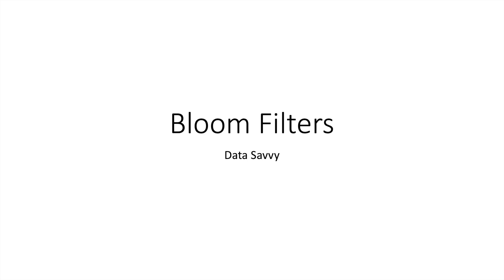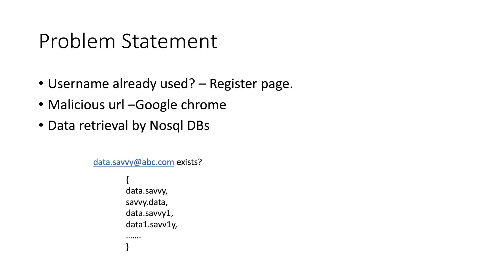In today's video we are going to discuss bloom filters. Let us first understand where bloom filters are used. When you register on Gmail for creating a new account, Gmail checks if the username already exists or not. Behind the scenes it is using bloom filters to check if the username you want is already used by someone. Similarly, when you try to access a URL on Google Chrome, Google Chrome uses bloom filter to check if that URL is malicious or not.